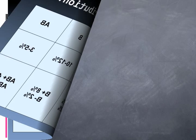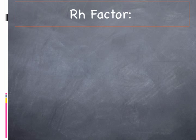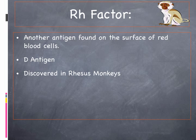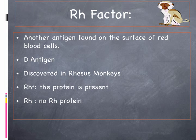What determines that positive or negative? It's something called the RH factor, which is nothing more than another protein — another antigen found on the surface of the red blood cells. It's referred to as the D antigen. It's called the RH factor because it was first discovered in rhesus monkeys. If you are RH positive, you have that D antigen; if you are RH negative, you do not.